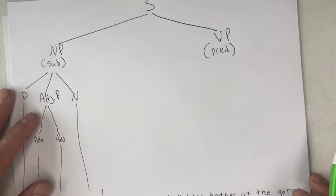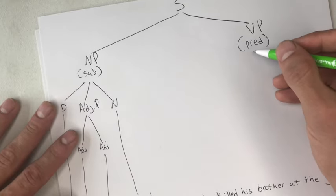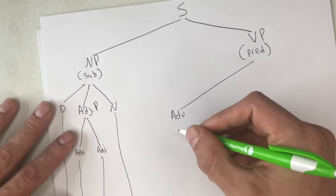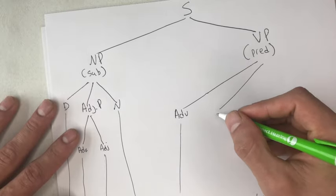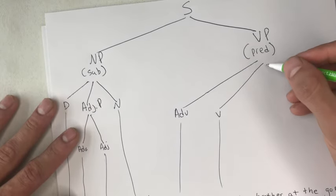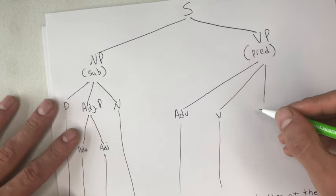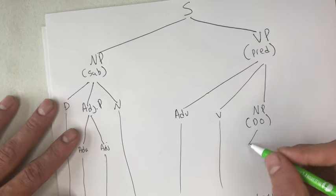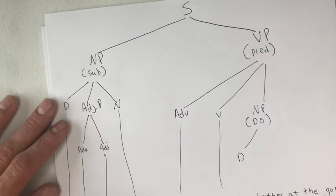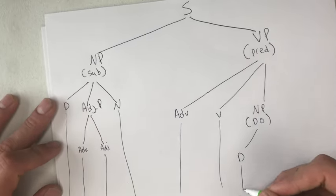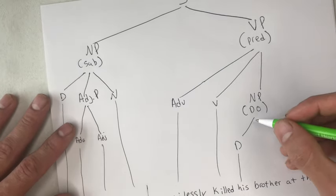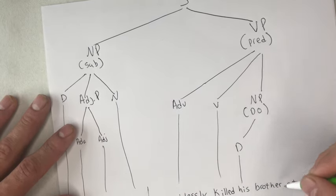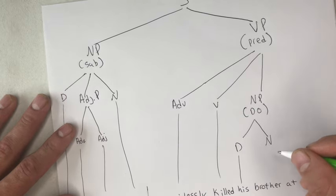We can further break our predicate down. It's a verb phrase that starts off with an adverb — 'mercilessly' — and it also contains a verb, 'killed,' and then a direct object, which is another noun phrase. The direct object can be divided into a determiner — this time it's not an article but a possessive determiner, 'his' — and then the noun 'brother.' It tells us whose brother we're talking about, so it's still functioning as a determiner.